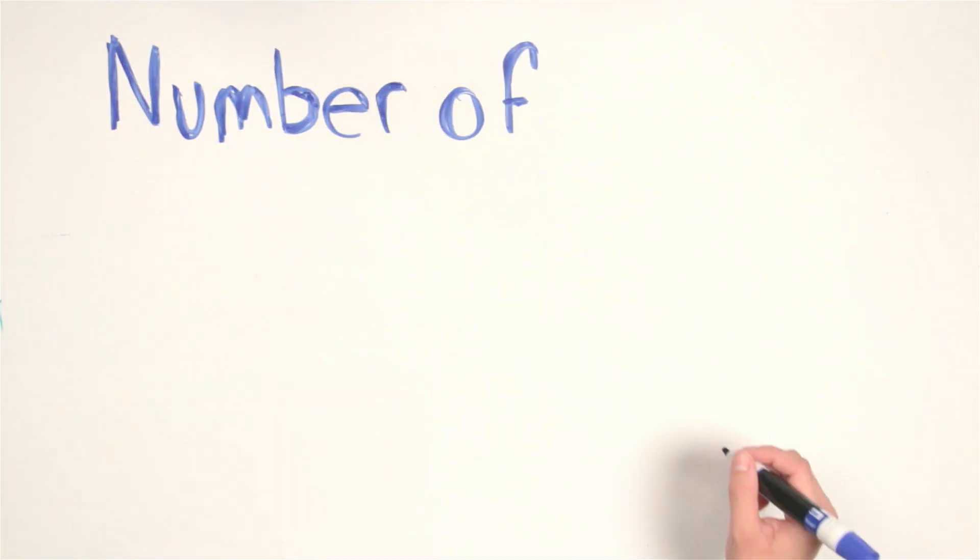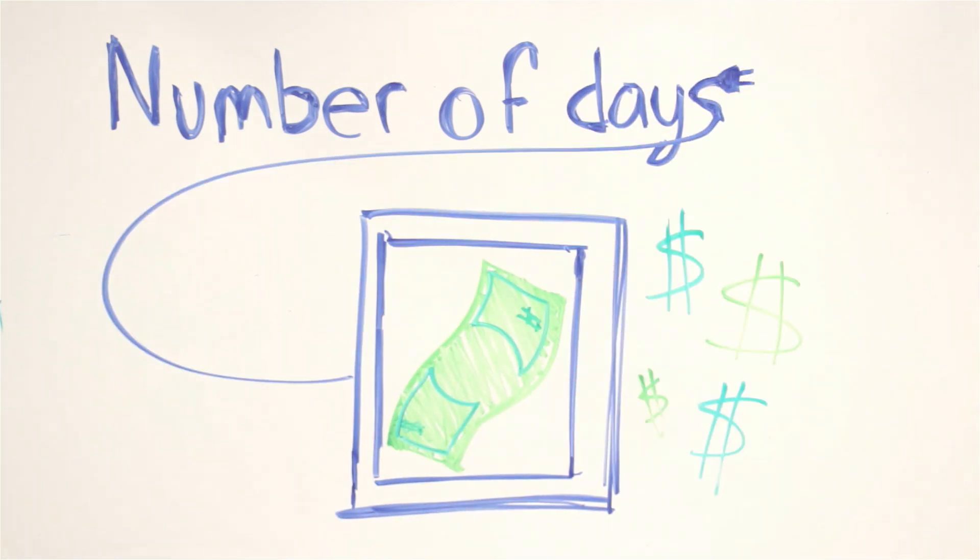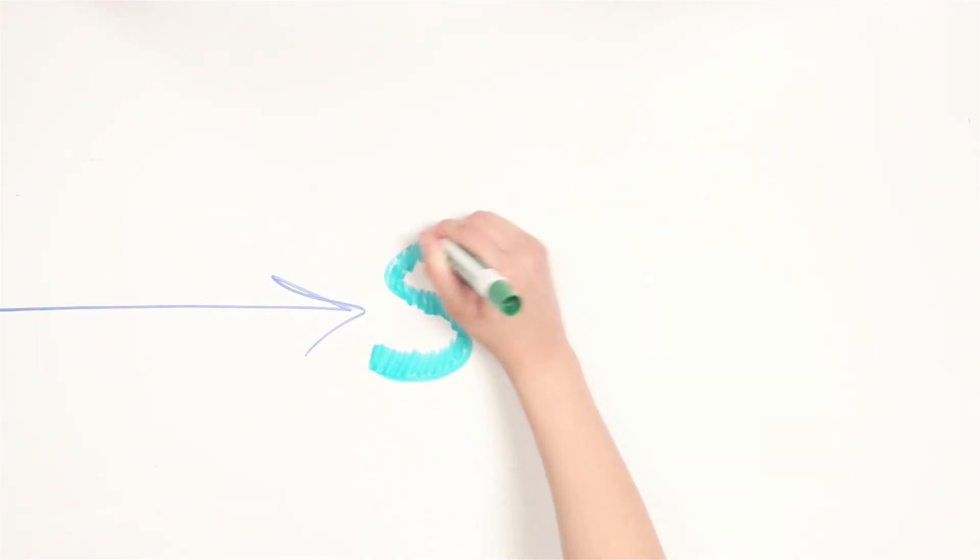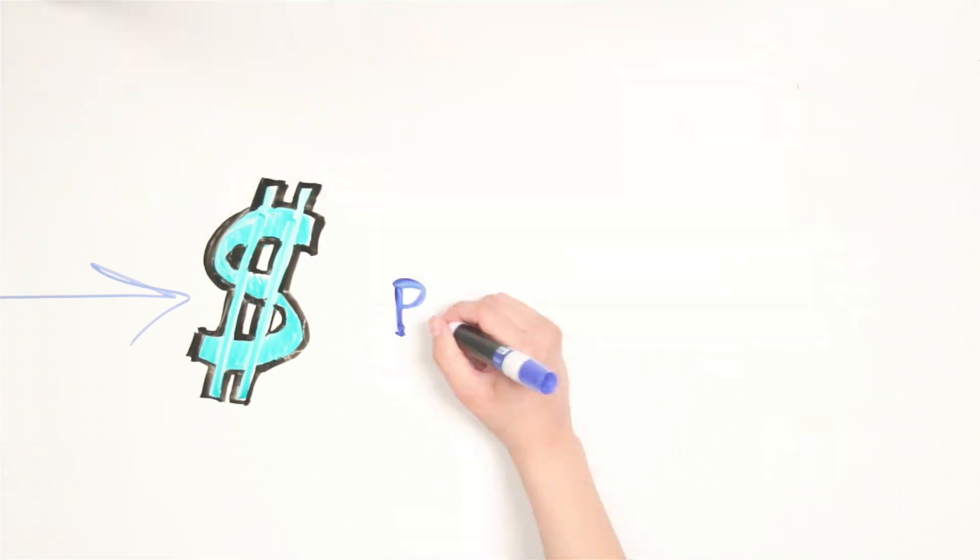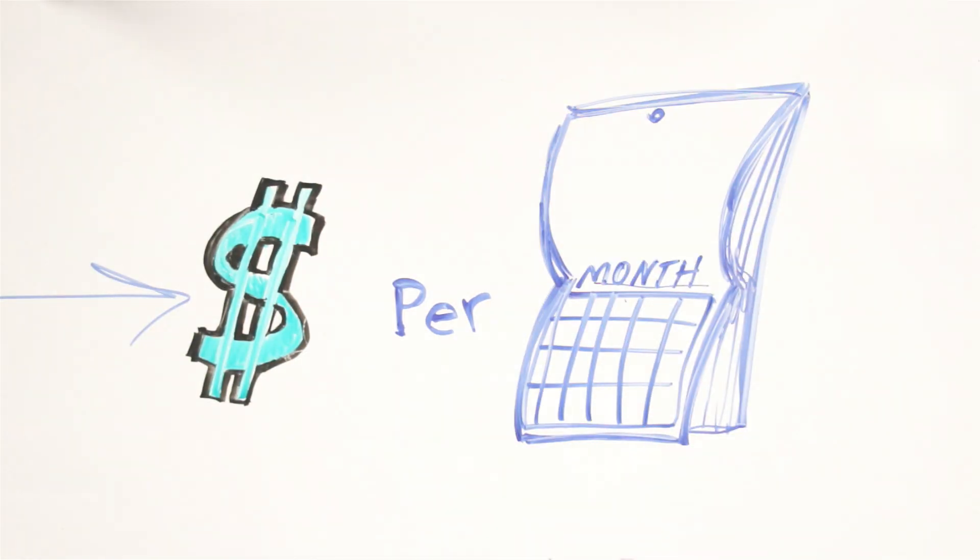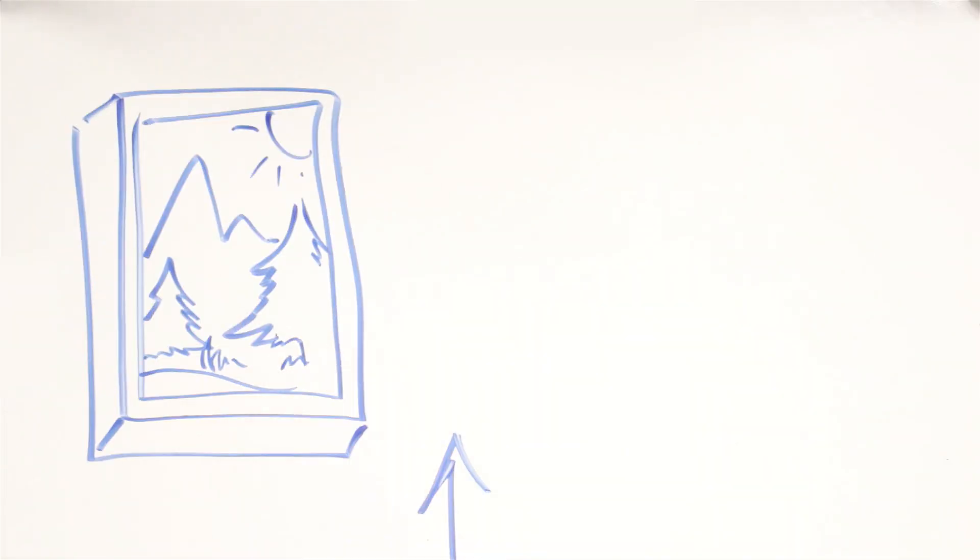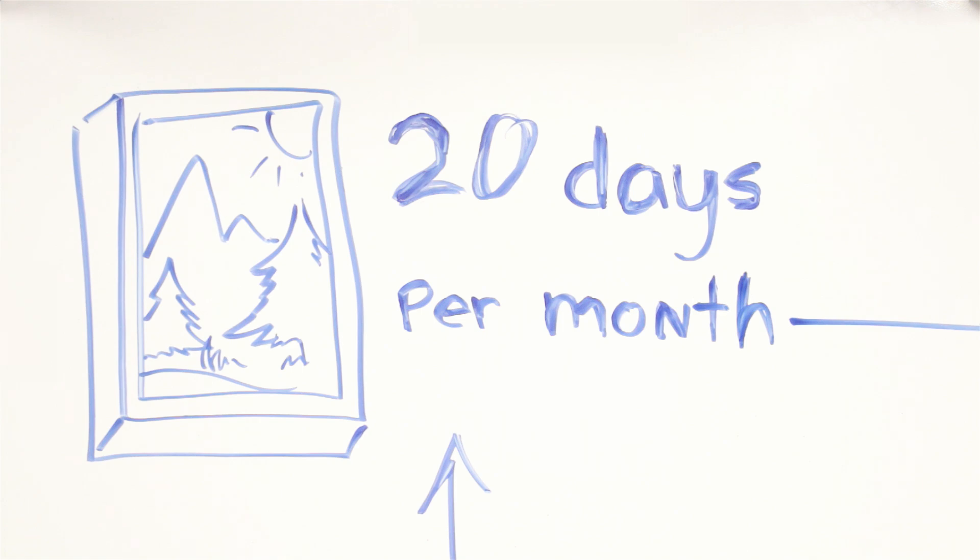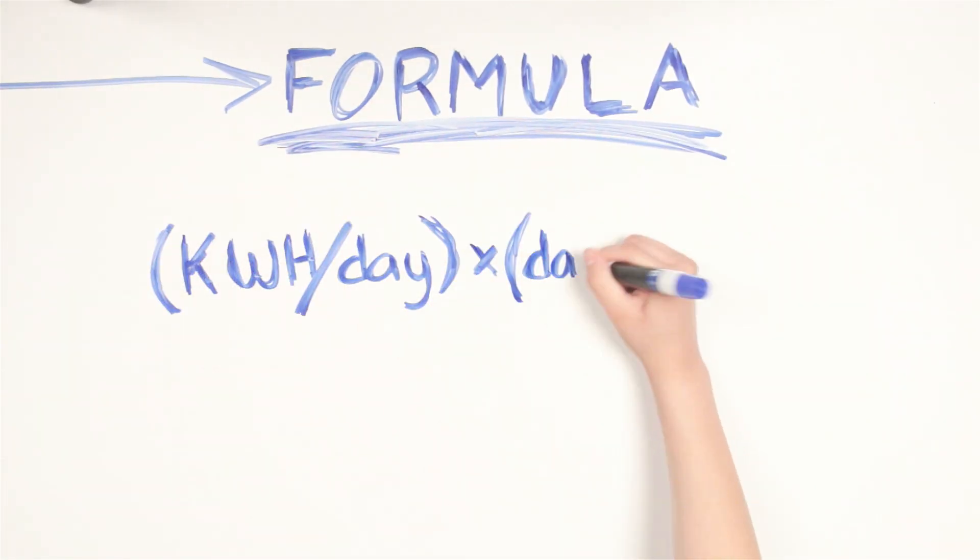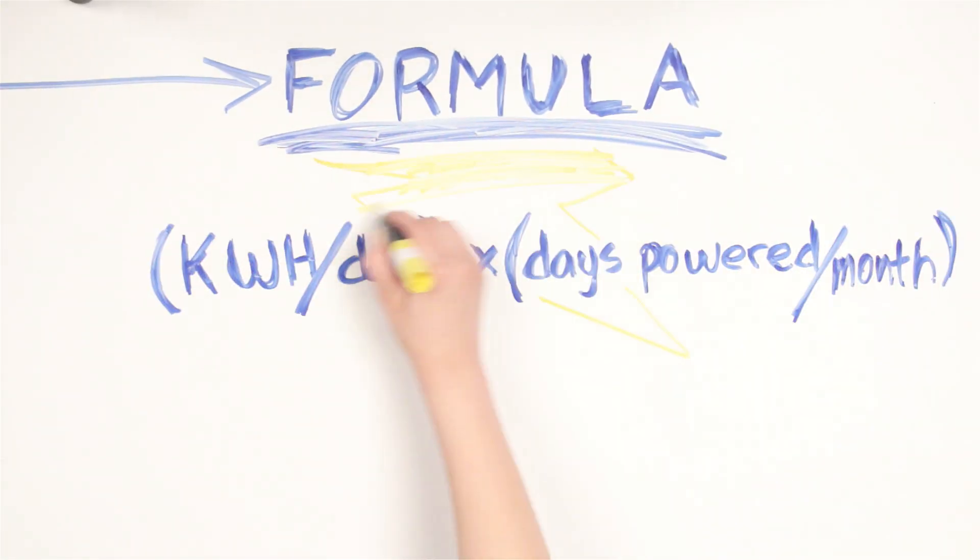Then add up the total number of days you expect to power the lightbox for whatever time period you need to know the cost for. For example, if you want to calculate the cost per month and if you expect to power the lightbox 20 days per month, then the formula is kilowatt hours per day times days per month to get your total kilowatt hours per month.